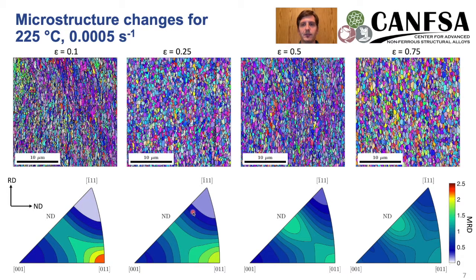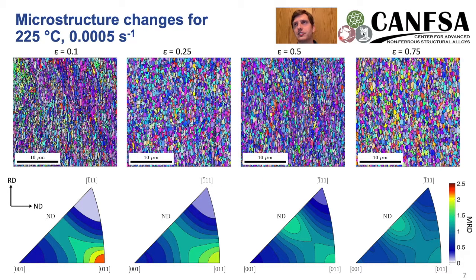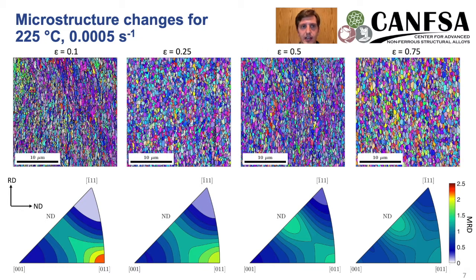If we have all these conditions, grain boundary sliding is very favorable, and this is shown here in these EBSD inverse pole figure maps where we can see that throughout strain up to 0.75 true strain, we have quite a stable grain size still about 1 micron or less. Also in our inverse pole figures themselves we see a general weakening of texture, which is also highly indicative of grain boundary sliding.